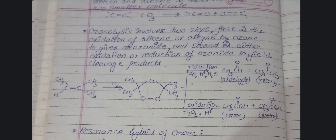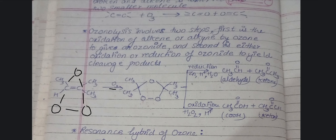जब आप double bond तोड़ेंगे और O₃ molecule उस पर attach होगा, तो हमेशा ध्यान रखिएगा: arrangement ऐसा लगाना है — ऊपर एक और नीचे दो, always। जब यह arrangement बन जाएगा तो उसे attach कर दीजिए। बाकी सारी चीजें as it is रहेंगी। यह पहला step हो गया और इस तरीके से structure बन जाएगा।